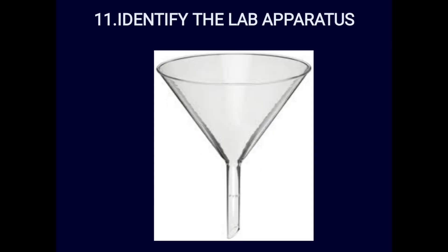Spotter eleven: identify the lab apparatus. This is a glass funnel — plastic versions also exist. It is mainly used for filtration. You place filter paper in the cone shape at the top, add the precipitate solution, the residue remains on the filter paper, and the clear supernatant fluid is collected below. The answer is glass funnel.